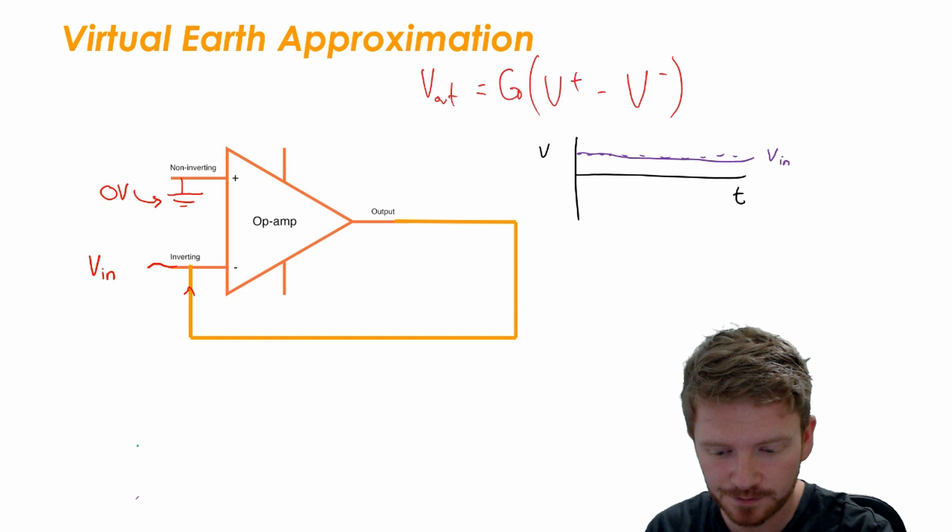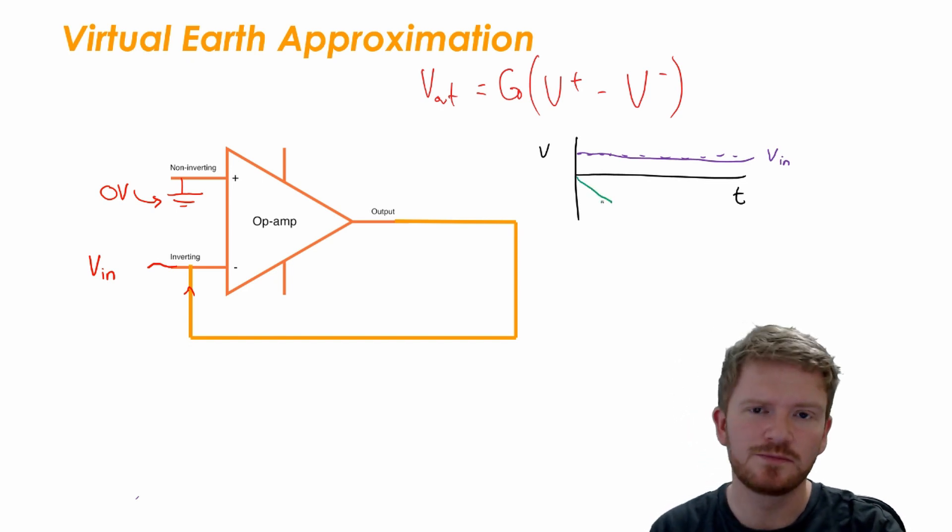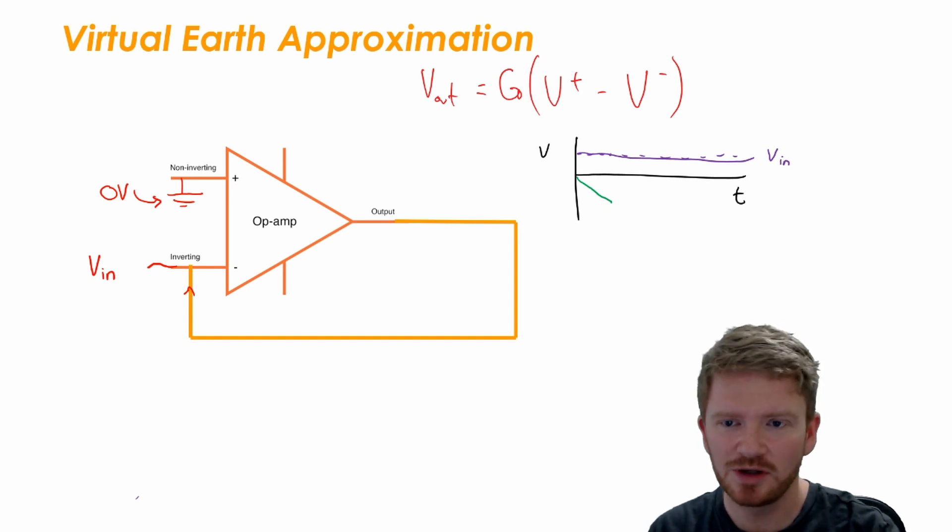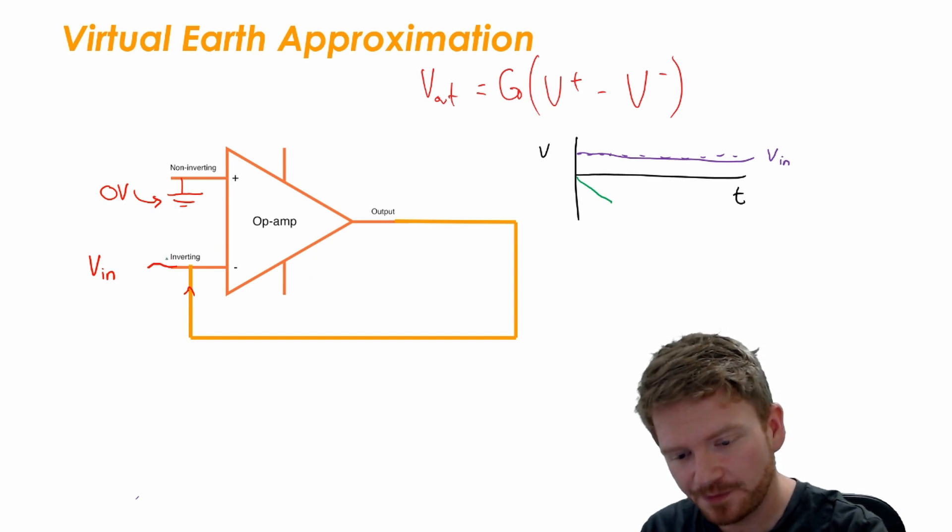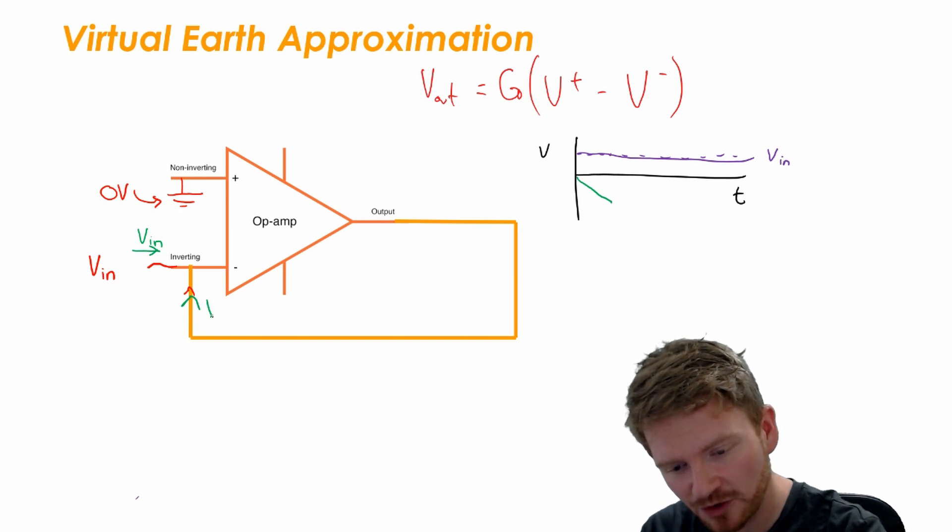But let's think about what's happening now at the inverting input. What I've got is a potential coming in that is V_in and it's meeting a potential from the output of V_out.